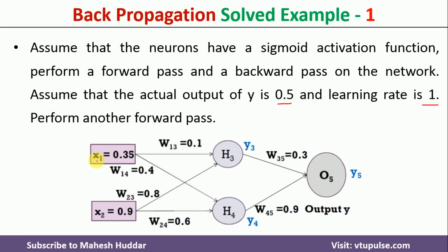This is the network given to us. We have two inputs x1 and x2 with values 0.35 and 0.9. There is one hidden layer with two neurons h3 and h4, and one output neuron O5. y3 and y4 are the outputs of the hidden units and y5 is the output of the output unit. w13, w14, w23, and w24 are the hidden layer weights with initial values 0.1, 0.4, 0.8, and 0.6 respectively. w35 and w45 are the output unit weights with values 0.3 and 0.9 respectively.